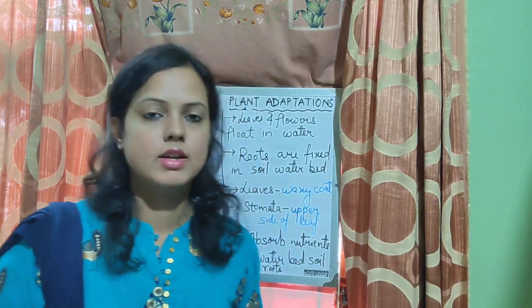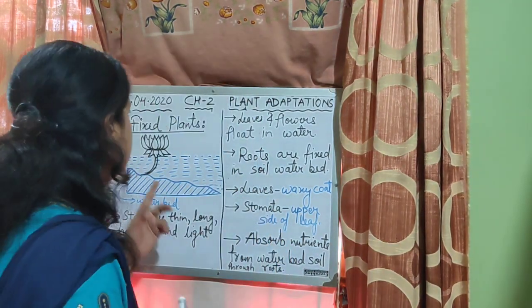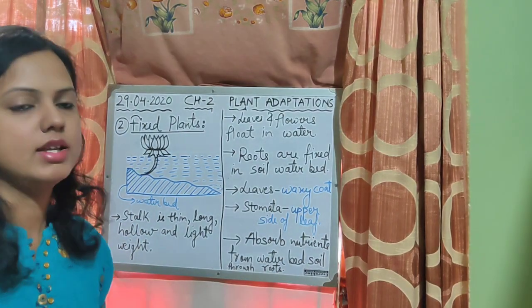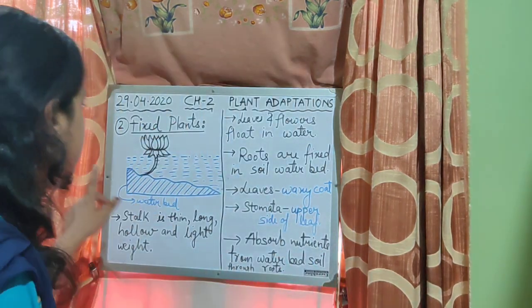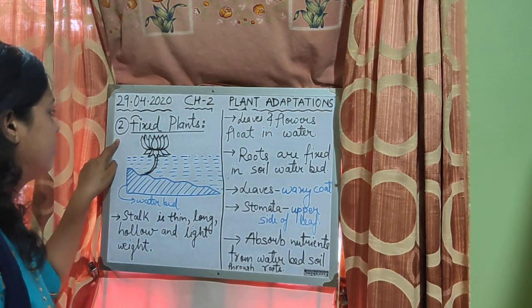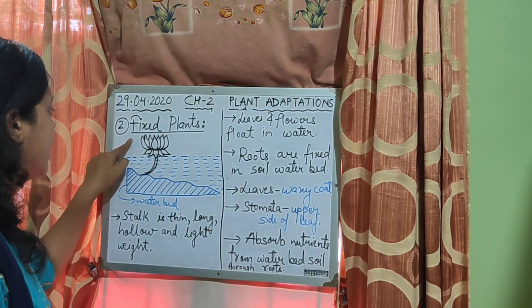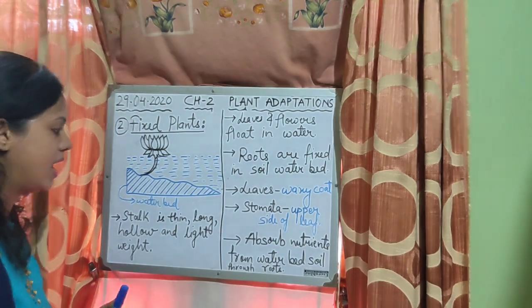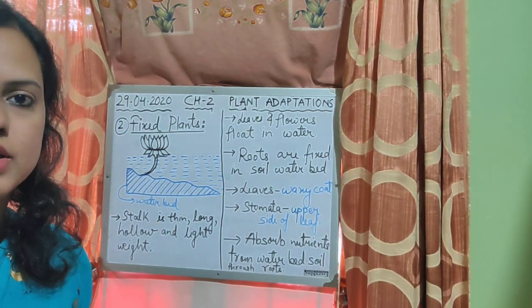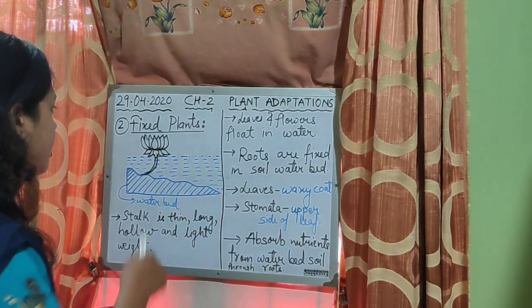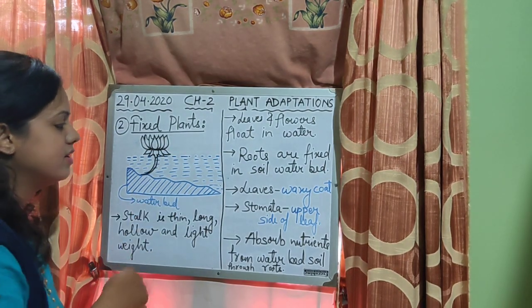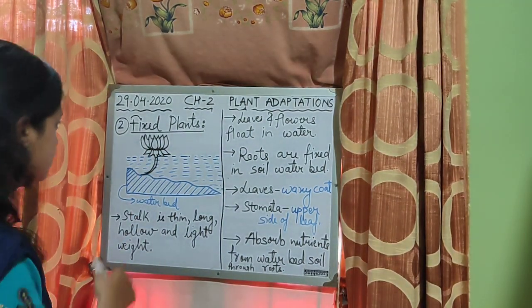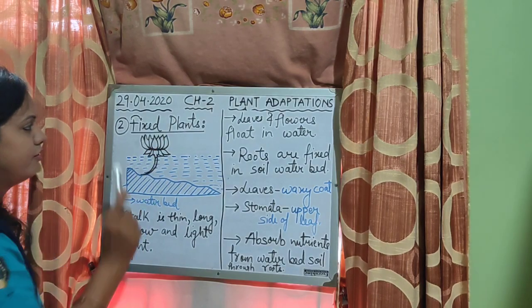Welcome back students. We are learning about aquatic plants. In the last video we saw the first type, which was emergent plants. Now the second type of aquatic plants are fixed plants. Let's see what fixed plants are like and what adaptations a fixed plant has to live in its habitat.